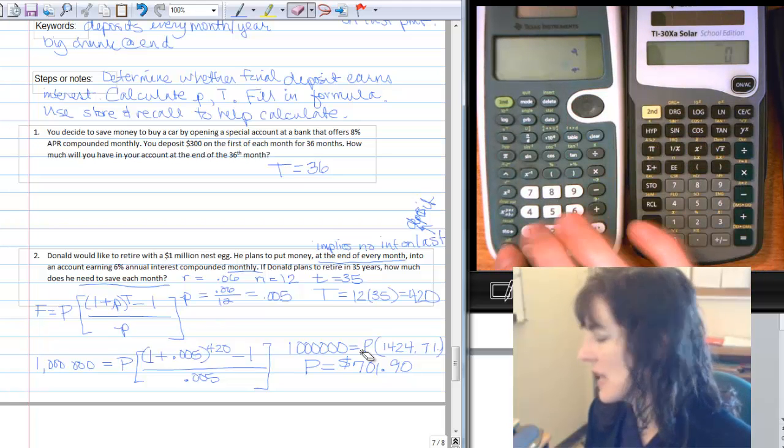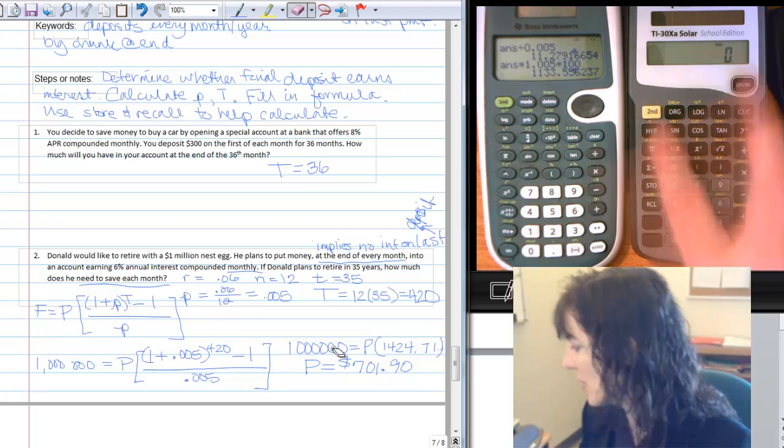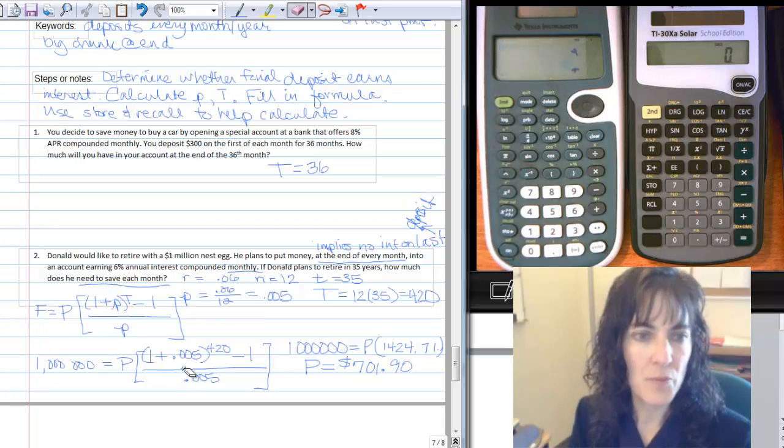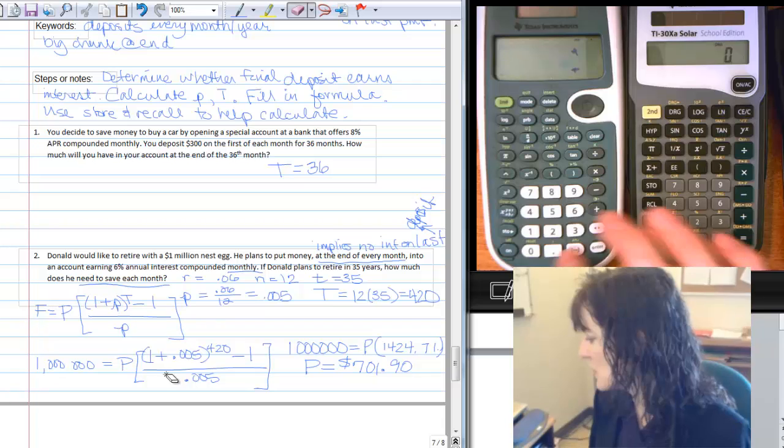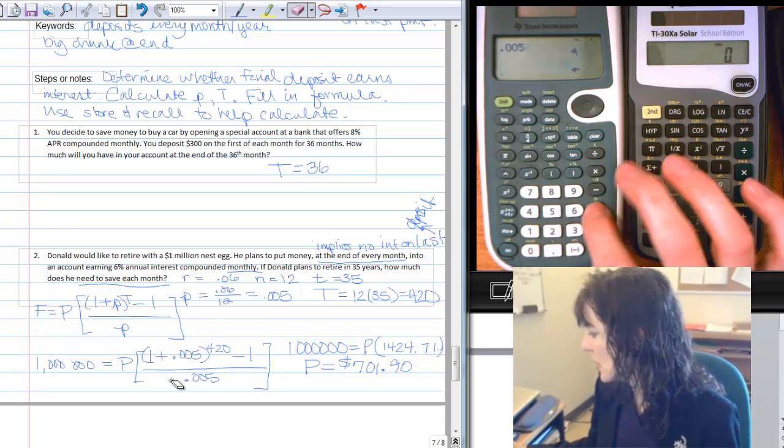And now let's look at this last calculator one more time for our calculations. We have .005 plus 1, so I'll do .005 plus 1.